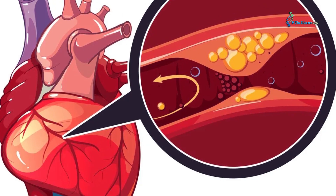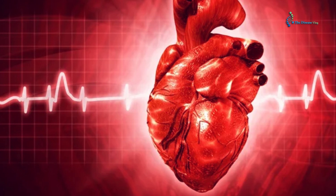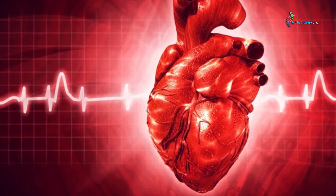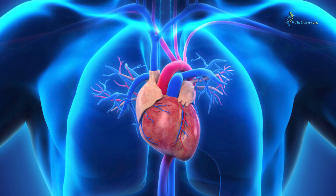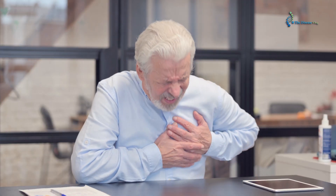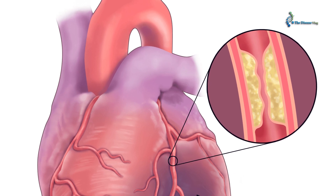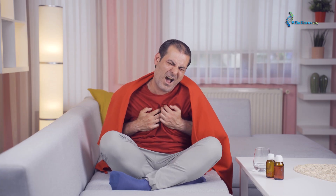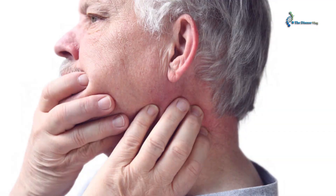The second type is non-obstructive CAD. This condition does not occur due to plaque. It is a state in which the coronary arteries have problems such as compression of heart muscles, the lining of arteries being damaged, and in some cases the small arteries malfunctioning. Non-obstructive CAD is most common in females. The third and most life-threatening type is spontaneous CAD, a condition in which a hole or tear develops in the coronary artery wall that blocks blood flow, leading to a heart attack. Chest pain or pressure, jaw or neck pain, and shortness of breath are the main symptoms of this type.